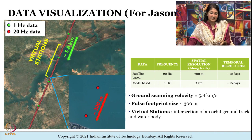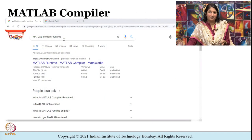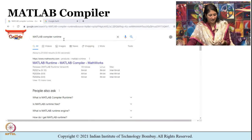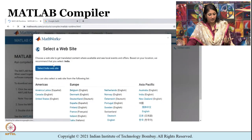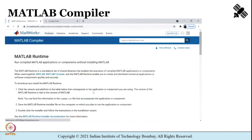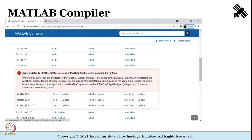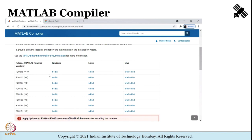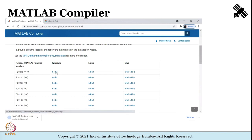Now let us try to visualize the data using MAPS. To install MAPS we need to have the MATLAB compiler. You can go directly to the website to download the MATLAB compiler where a number of versions are given. I am going to use the 64-bit Windows version.